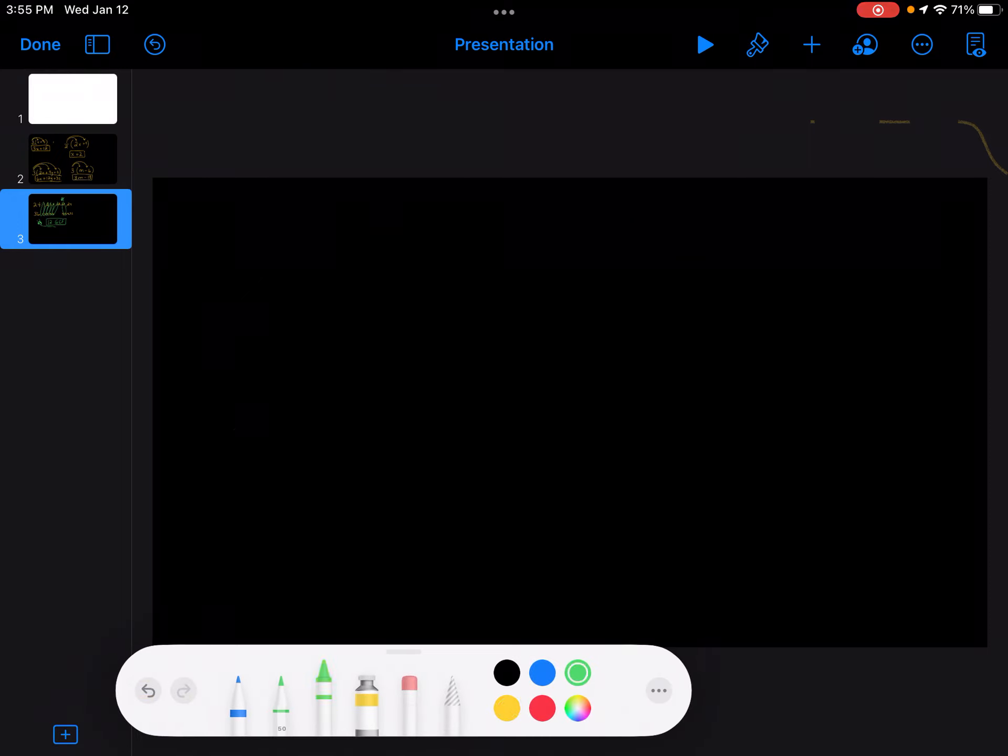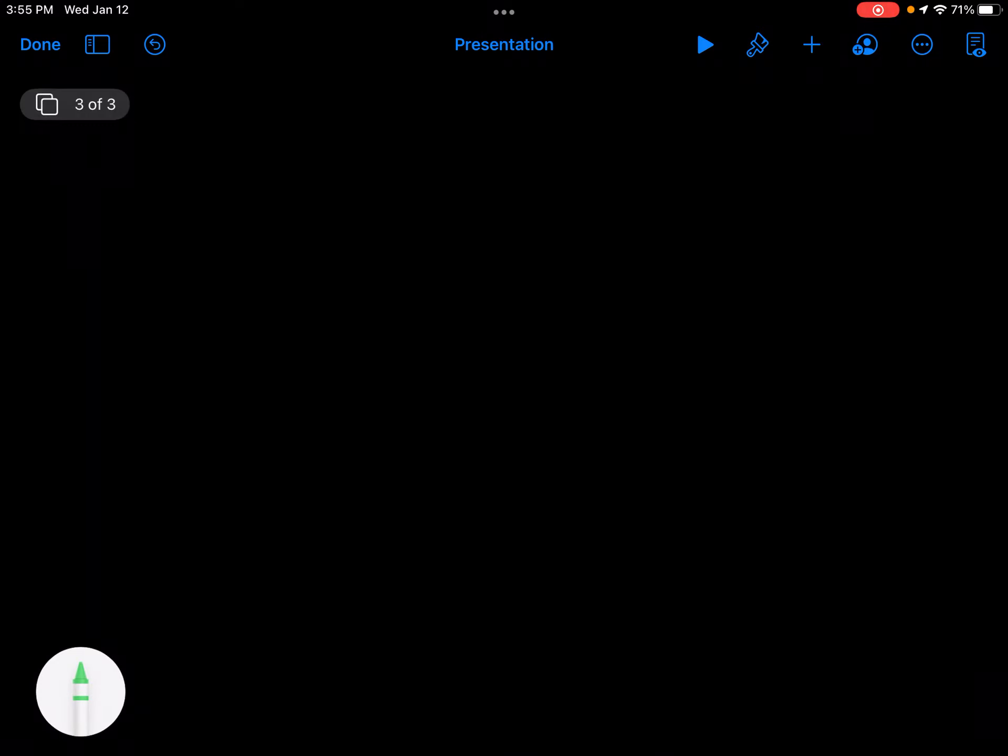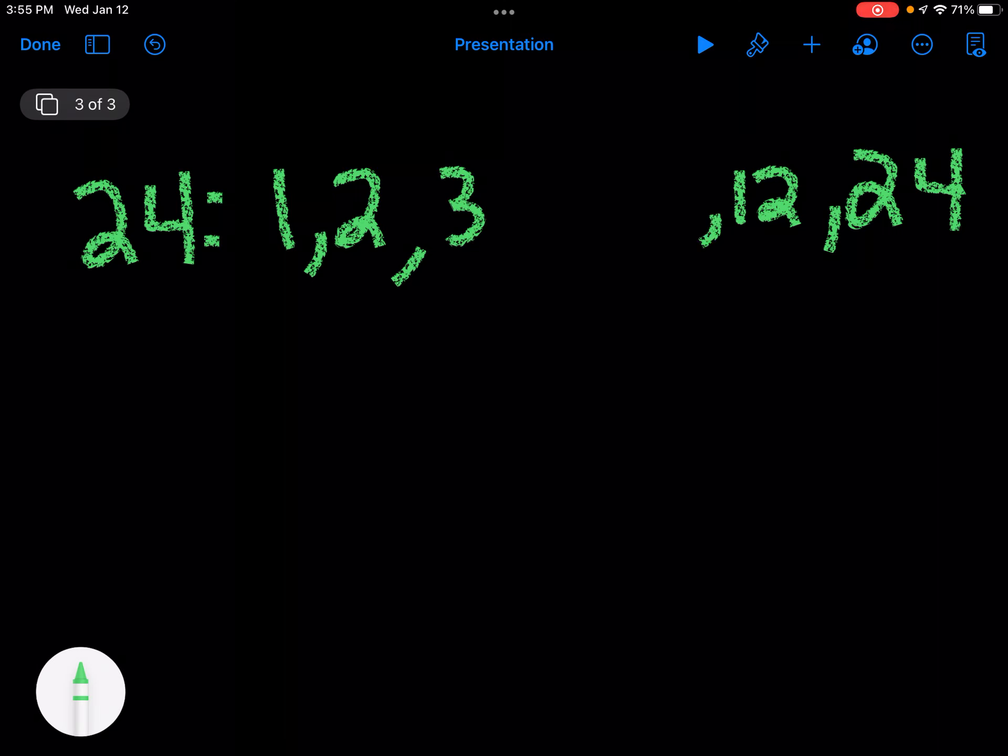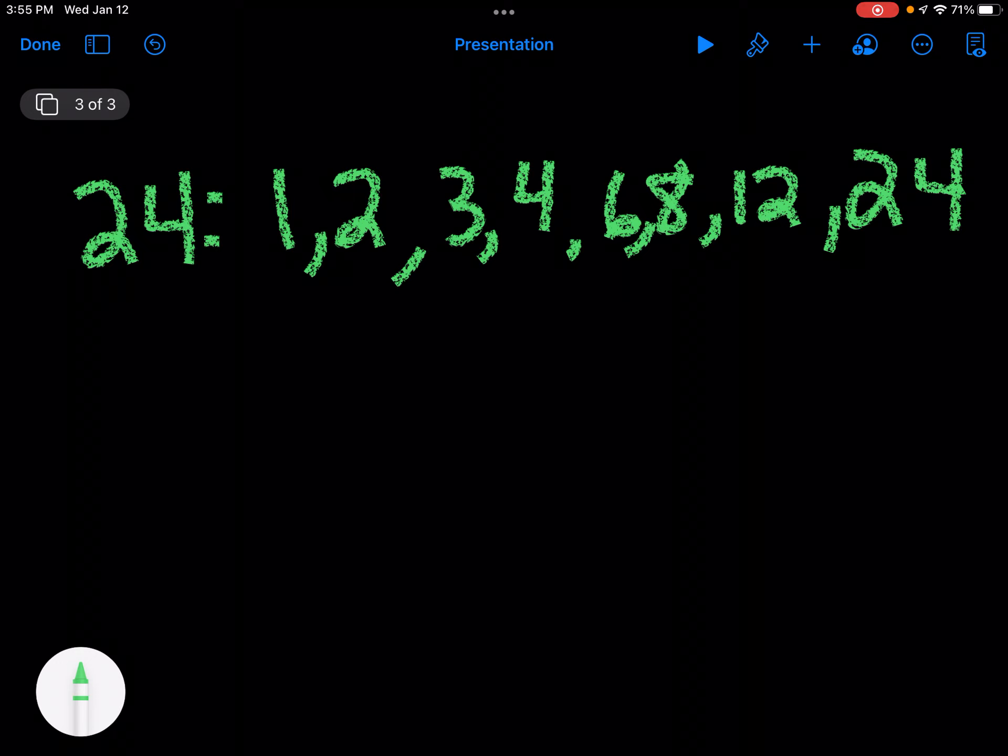Now if I want to look at greatest common factor, we're talking about all the numbers that you can multiply together to get that number. So let's talk about 24. Well, I can do 1 times 24 to get 24. I could do 2 times 12. I could do 3 times 8. I could do 4 times 6. And well, 5 doesn't go into 24. So those are all my factors, all the numbers that I can multiply by something else to get 24.